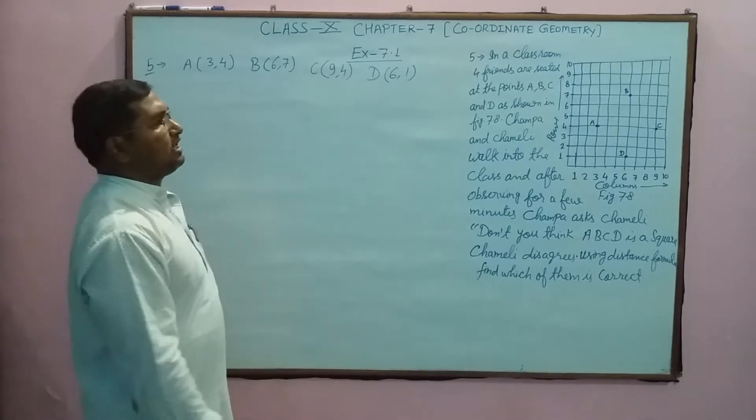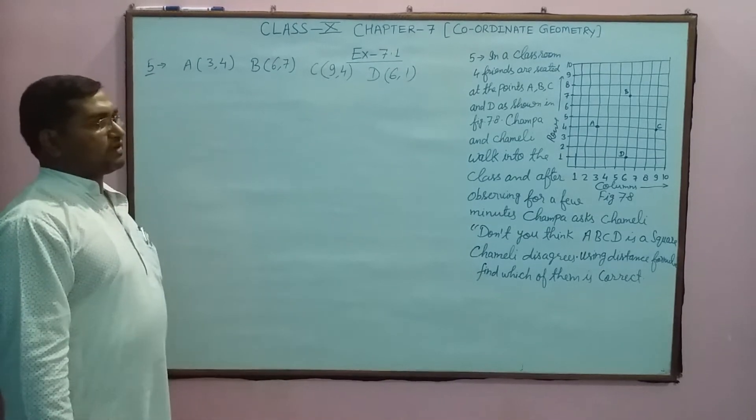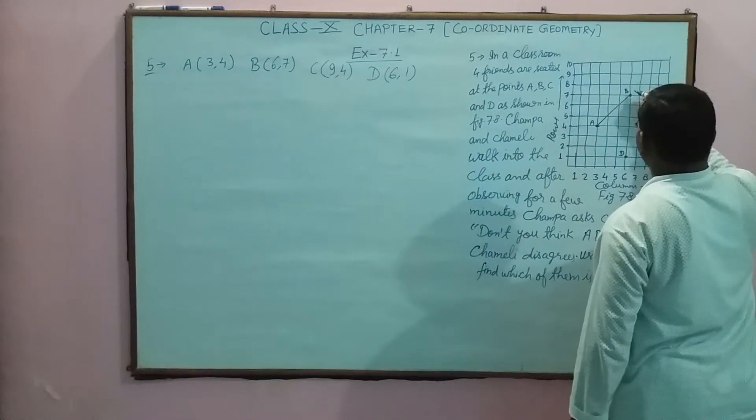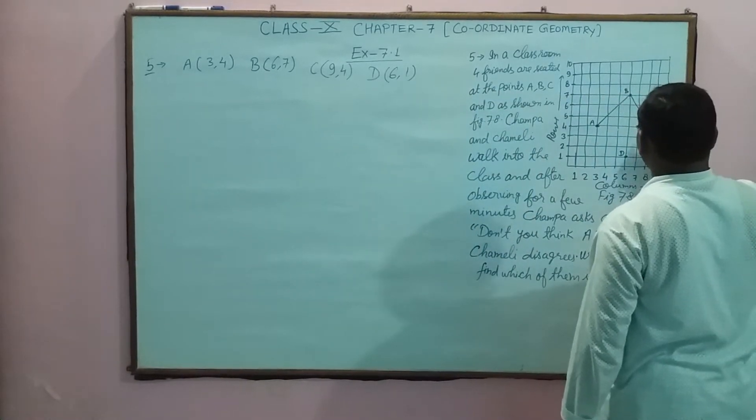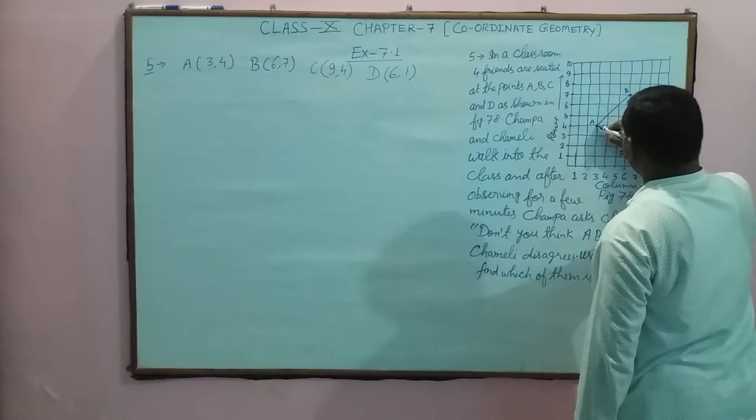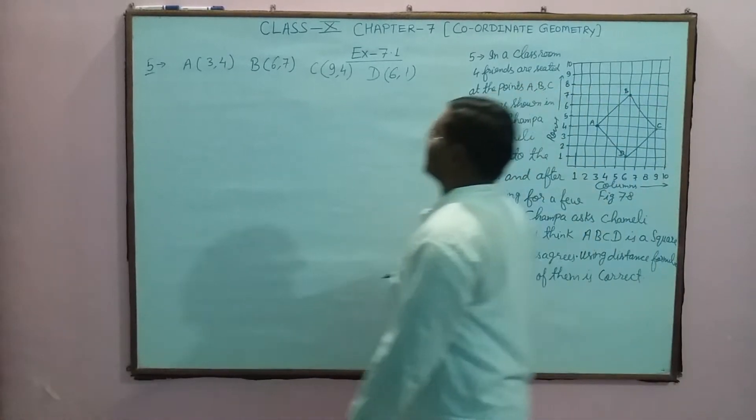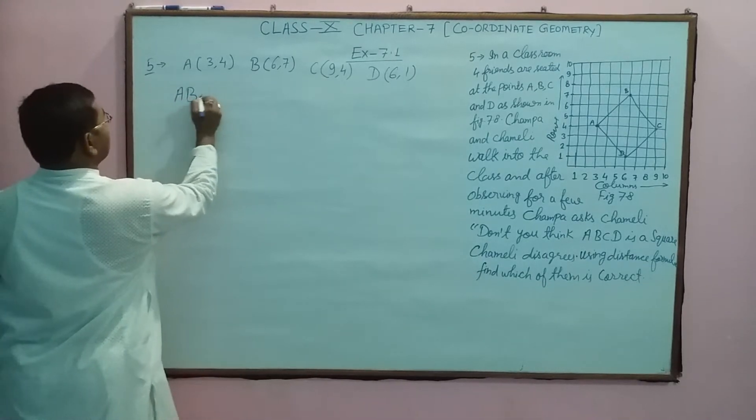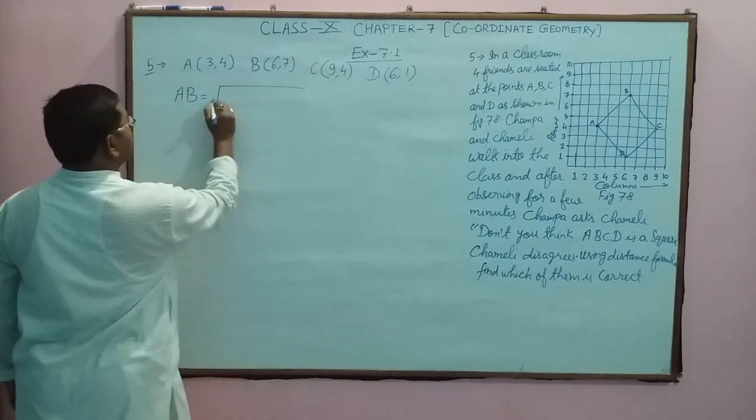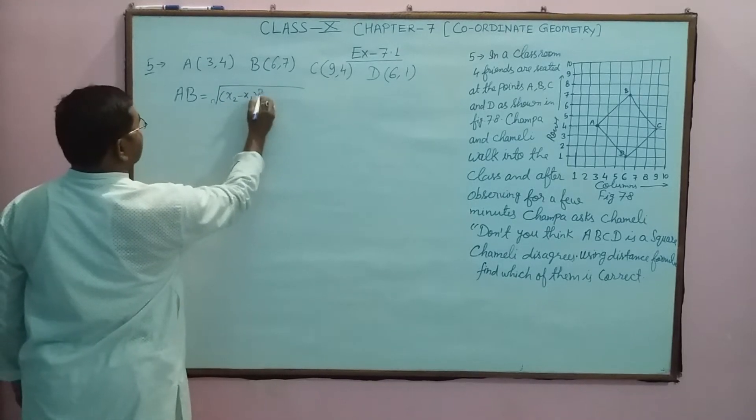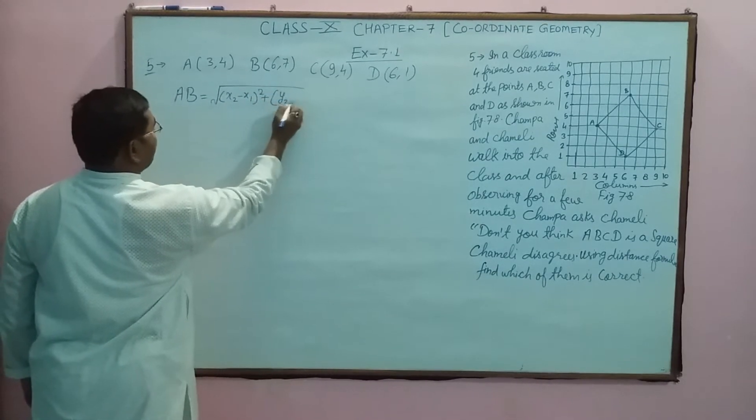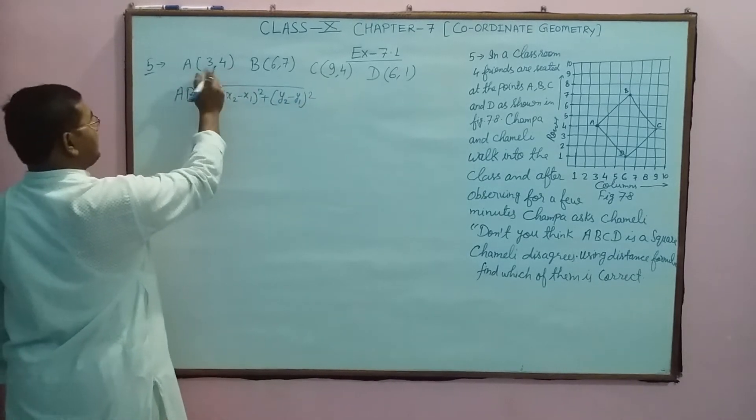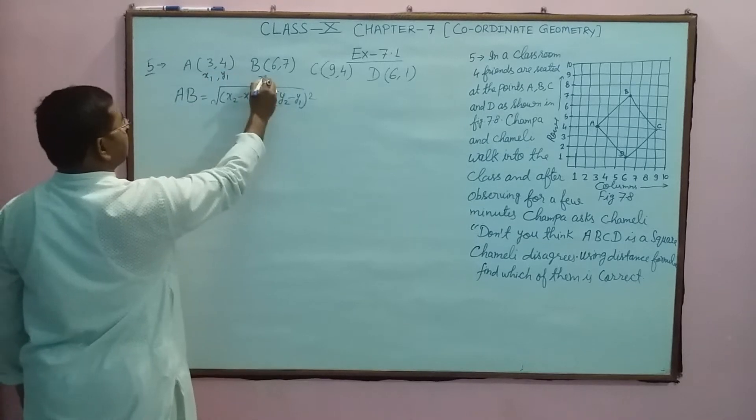Now for a square, you should find AB, BC, CD, and AD. So if we join, then this will be the figure. AB equals square root of (x2 minus x1) whole square plus (y2 minus y1) whole square. This is the distance formula. A is (x1, y1) and B is (x2, y2).